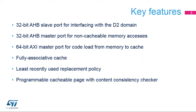ART accelerator features: a 32-bit AHB slave port to interface with the D2 domain; a 32-bit AHB master port for non-cacheable memory accesses; a 64-bit AXI master port to load the code from memory to cache; 64 cache lines of 256 bits; fully associative cache; programmable cacheable page; and cache content consistency checker.